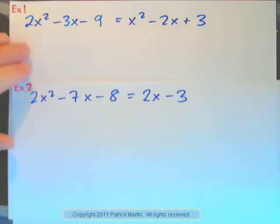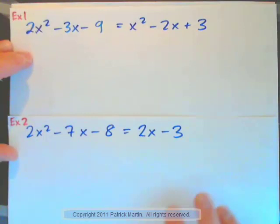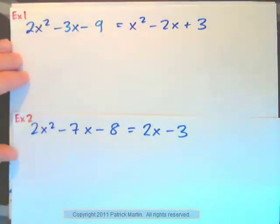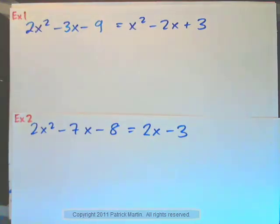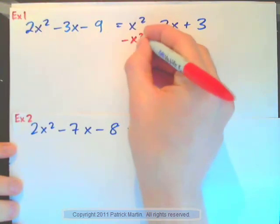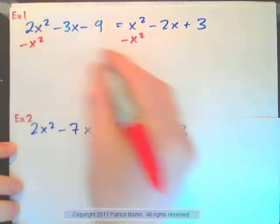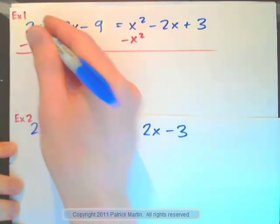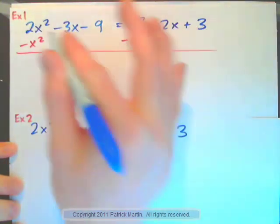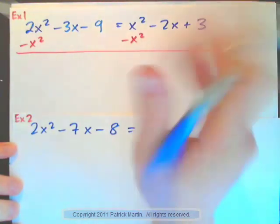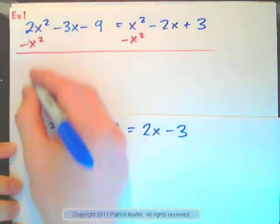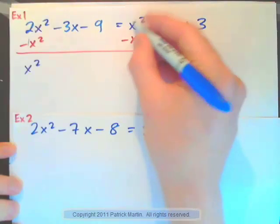Okay, so let's take this example one. We have 2x squared minus 3x minus 9 equals that. How about let's try and get zero on the right-hand side. So we would say subtract x squared from both sides. And remember, x squared and x, these are not like terms, and the constants are not like terms. So 2x squared minus 1x squared would be x squared. And this would be zero.